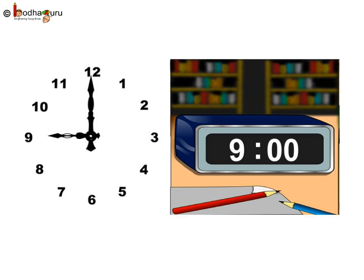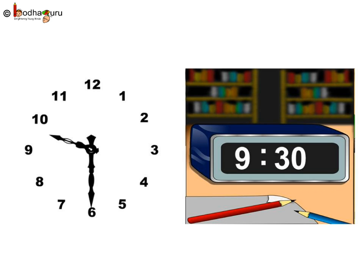So what time is it now? It is 9 o'clock. And in the digital clock, it is written as 9 colon 00, 9 hours 0 minutes. And what is the time now? 30 minutes past 9 or 9 hours 30 minutes.